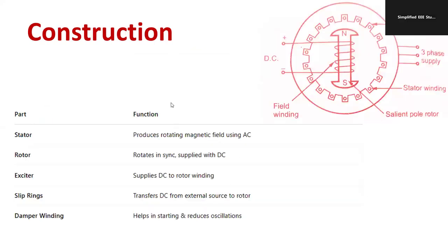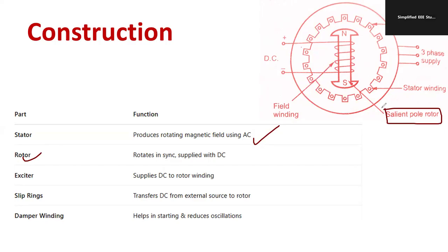Regarding the construction of a synchronous motor: the stator is the outer part with stator winding that produces the rotating magnetic field. The rotor is inside. There are two types of rotor: salient pole rotor and non-salient pole rotor. You can see the salient pole — it is a projecting pole type rotor. The construction is the same as that of an alternator.